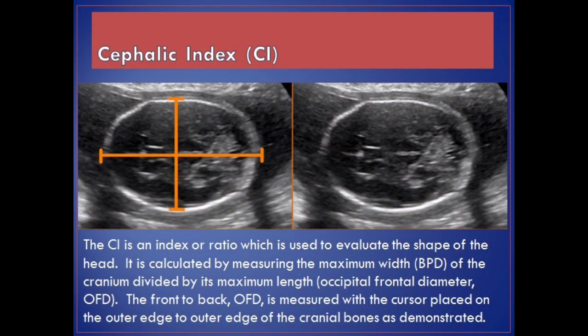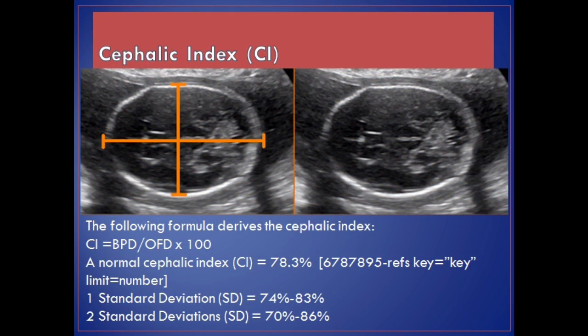Cephalic index, CI. The CI is an index or ratio used to evaluate the shape of the head. It is calculated by measuring the maximum width, BPD, of the cranium divided by its maximum length, occipital frontal diameter, OFD. The front-to-back OFD is measured with a cursor placed outer edge to outer edge of the cranial bones as demonstrated. The formula is: CI = BPD / OFD × 100. Normal cephalic index: CI = 78.3%; 1 SD = 74%–83%; 2 SD = 70%–86%.